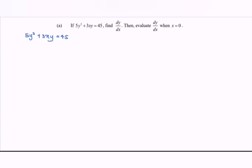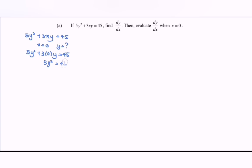First of all, find out the value of y. When x is equal to 0, what is the value of y? If we substitute: 5y squared plus 3 multiplied with 0 and then y, which is equal to 45. So rewrite the situation where 5y squared equals 45.